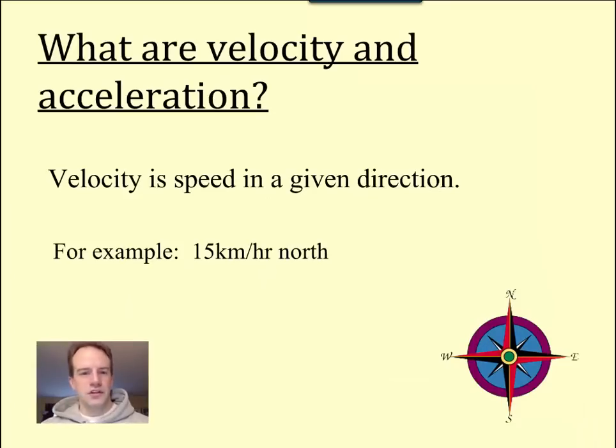What are velocity and acceleration? Well, velocity is speed in a given direction. So we have to have not only the speed, like 15 kilometers per hour north, and that north is the direction. This is a vector quantity, so we need to know what direction it is. That's what makes it a velocity versus just speed.